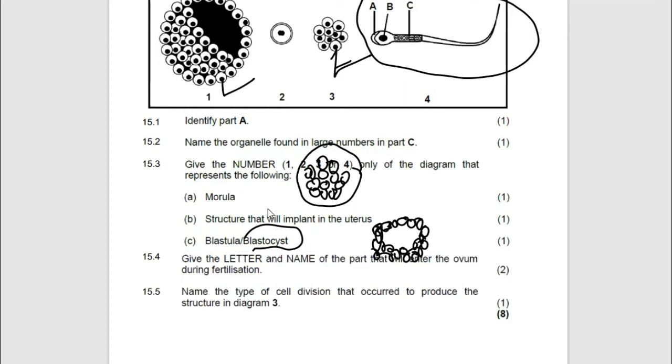Then they are saying the structure that will implant in the uterus. Which structure will implant? The moment you form a blastula, it is going to form finger-like projections which you call chorionic villi, which are used for implantation. So basically, it is going to be number 1 again. Give the letter and the name of the part that will enter the ovum during fertilization. This is the second time they are asking the same question. So it is B and it is the nucleus.